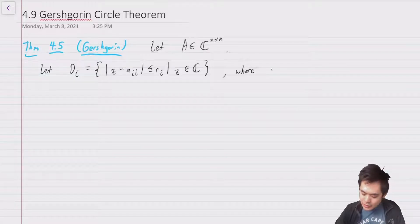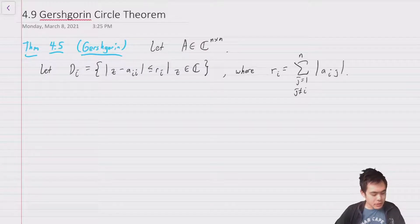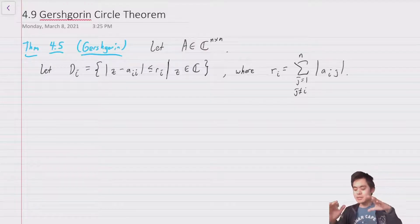So you notice that this is basically a circle, so a disk around the point a_{ii} of radius r_i. And we're going to define the radius r_i as equal to the sum over j equal 1 to n, and j can't be equal to i, so we're going to ignore i for that, of the magnitude of a_{ij}. So basically if you take all the a_{ij}'s, so this is all the things in row i except for the diagonal element, you sum together the absolute values and that gives you this radius r_i.